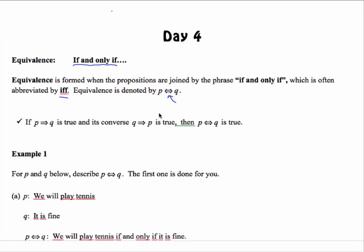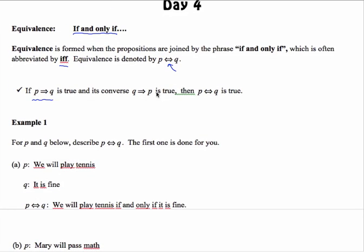So basically it's like a double conditional. If P then Q is true, and its converse Q then P is true, then P if and only if Q is true. So it's only true when we have P implies Q is true, and Q implies P is true.